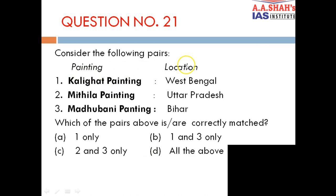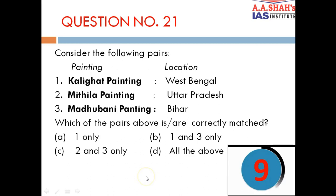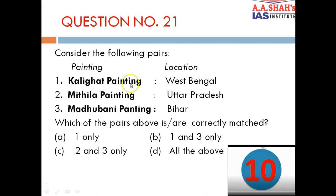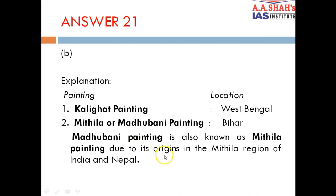Question 21: Consider the following pairs — painting and location. 1. Kalighat Painting, West Bengal. 2. Mithila Painting, Uttar Pradesh. 3. Madhubani Painting, Bihar. The correct answer is B — one and three only. Kalighat Painting is from West Bengal and Madhubani Painting is from Bihar — both correct. Mithila Painting is actually another name for Madhubani painting, also from Bihar — it has its origins in the Mithila region of India and Nepal, not Uttar Pradesh.